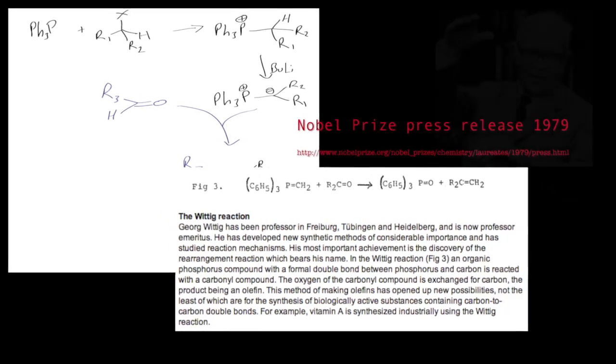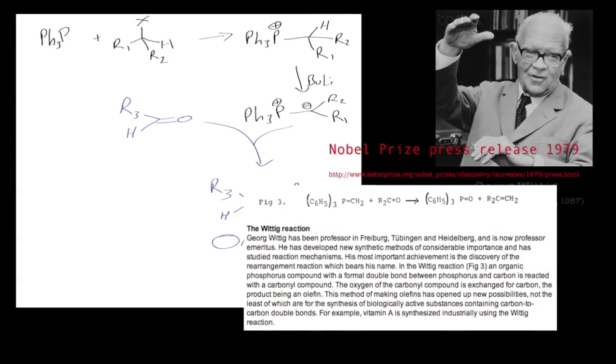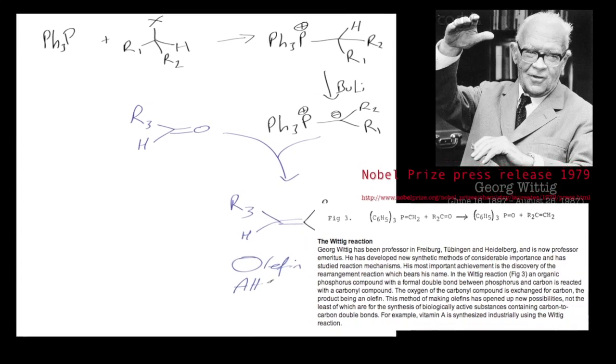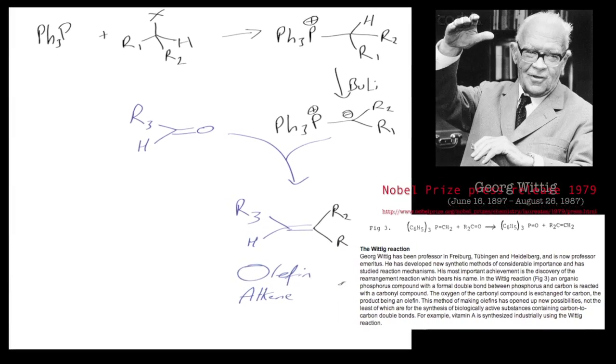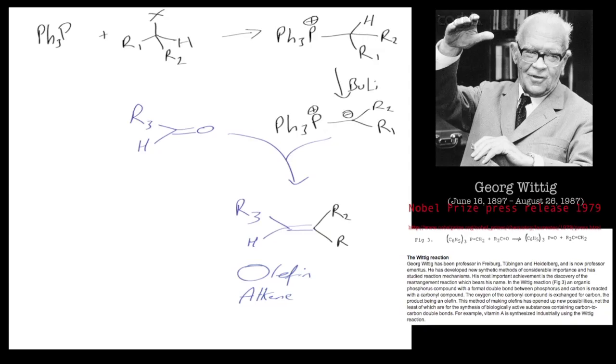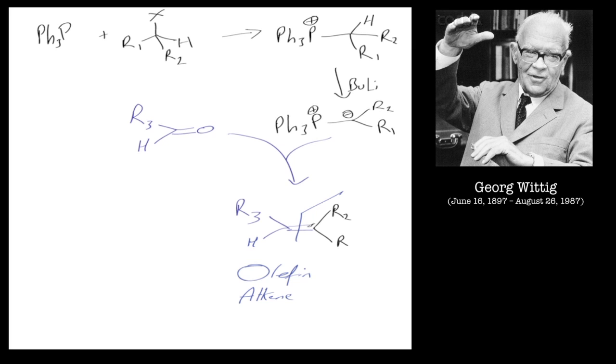I'll just write that down. So an olefin, sometimes called an alkene. It's a very powerful method because, doing a bit of retrosynthesis which you'll come across later on, just chop that in half there. It basically shows you that you can form alkene species from one component, one molecule there, with another molecule here.